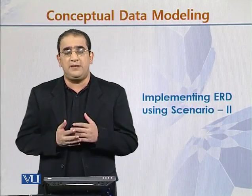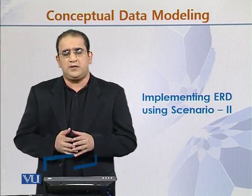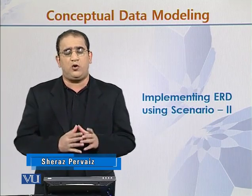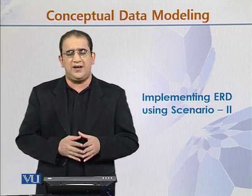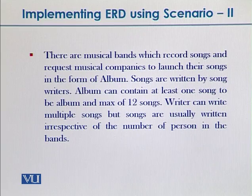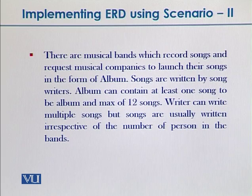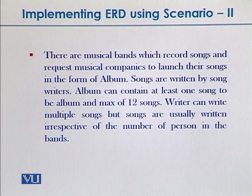Let's have a real-time scenario to discuss the complete flow — you should have your own version of the database diagram. Now let's explore the second version. The scenario says: there are musical bands which record songs and request musical companies to launch their songs in the form of albums. Songs are written by songwriters. Albums can contain at least one song and a max of 12 songs. Writers can write multiple songs, but songs are usually written irrespective of the number of persons in the band.